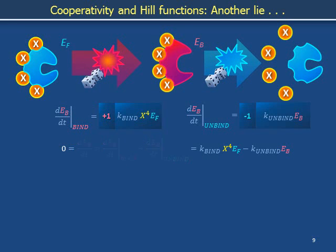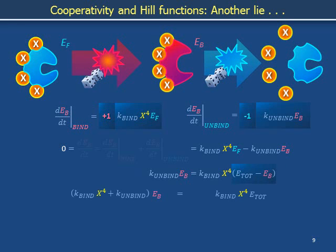The total time rate of change of the number of bound enzymes is the sum of the partial rates of change owing to binding and unbinding, which can be copied from above. Consider the steady state where the total time rate of change of the bound population is zero, where the time rates of binding and unbinding are balanced. Move K_unbind E_b from the right to the left-hand side. Recognize that the free enzyme population is the difference between the total enzyme population E_tot and the bound enzyme population E_b.